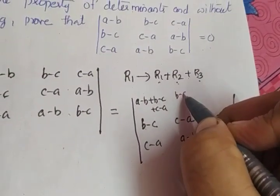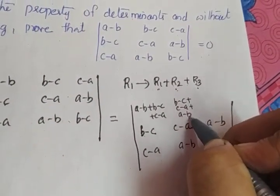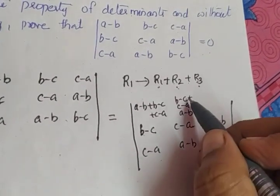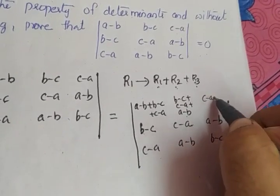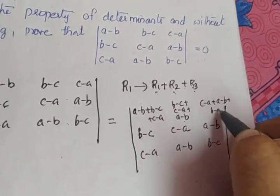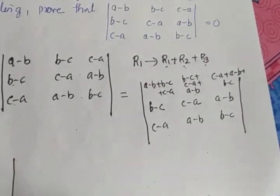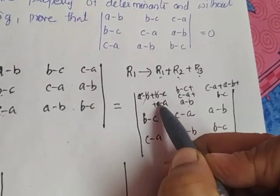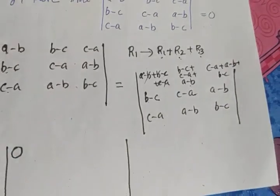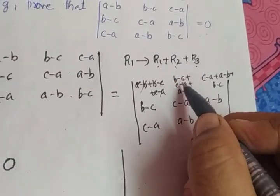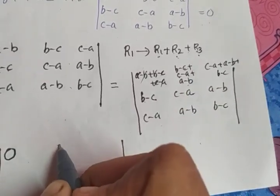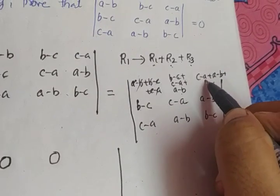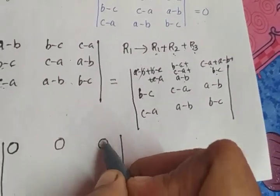The second element is B minus C plus C minus A plus A minus B. B minus B cancel, minus C and C cancel, minus A and A cancel — giving the second element as 0. The third element is C minus A plus A minus B plus B minus C. C and minus C cancel, minus A and A cancel, B and minus B cancel — leaving the value as 0.